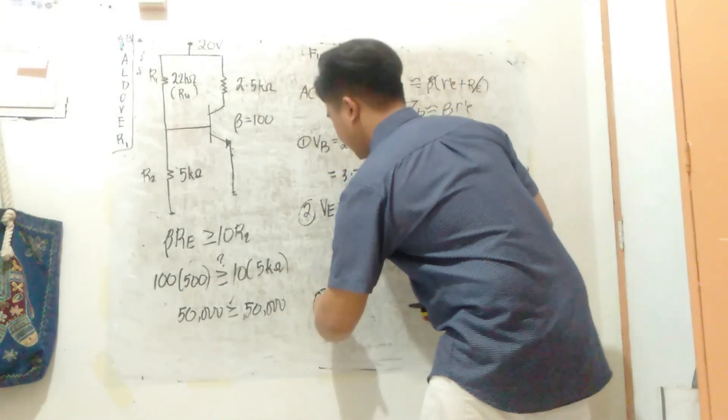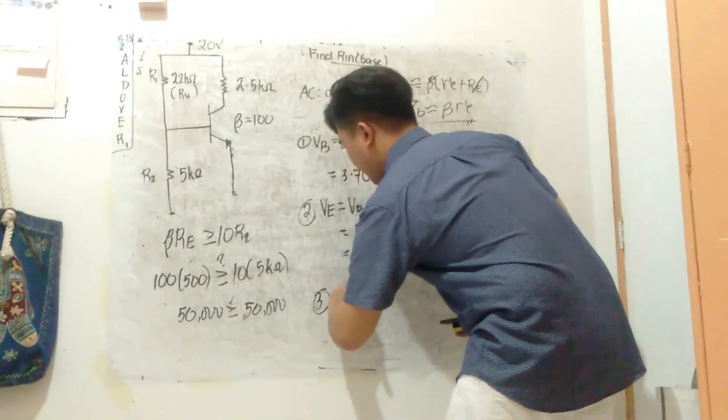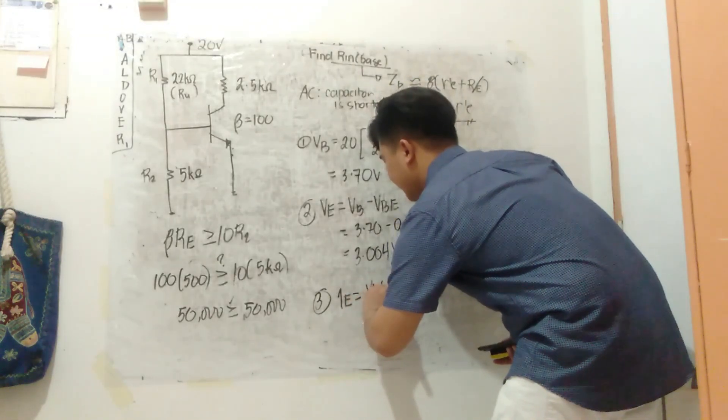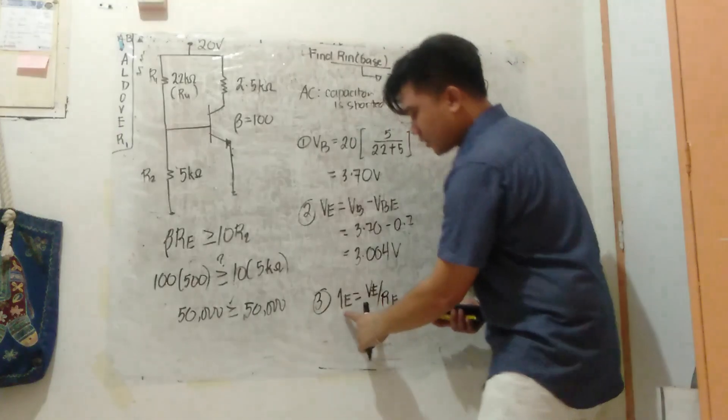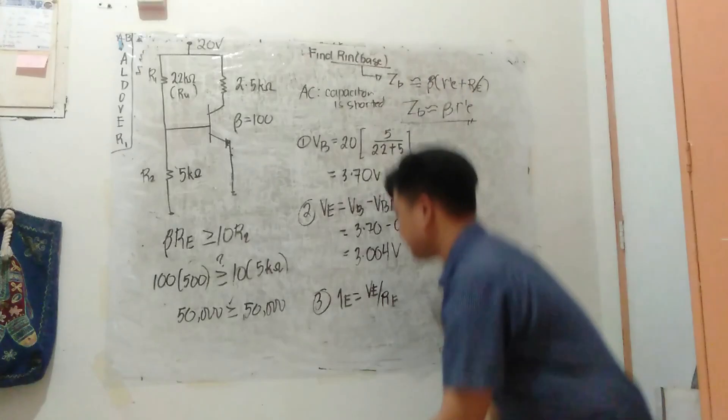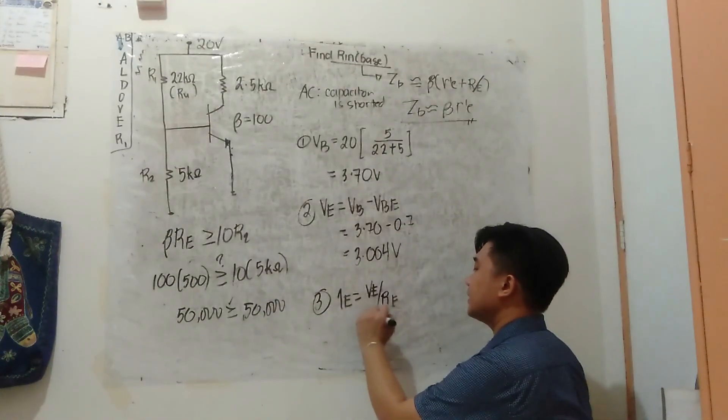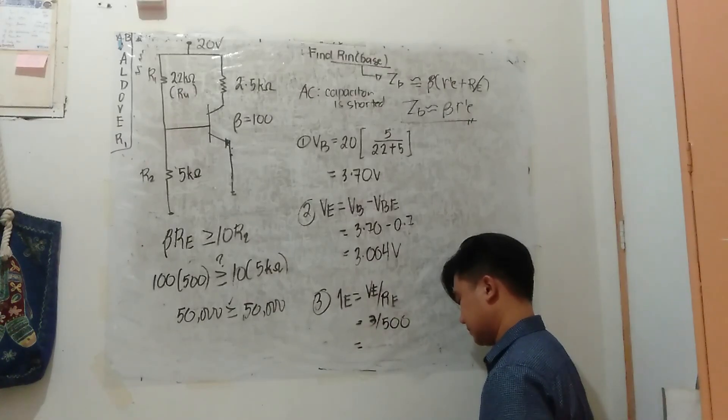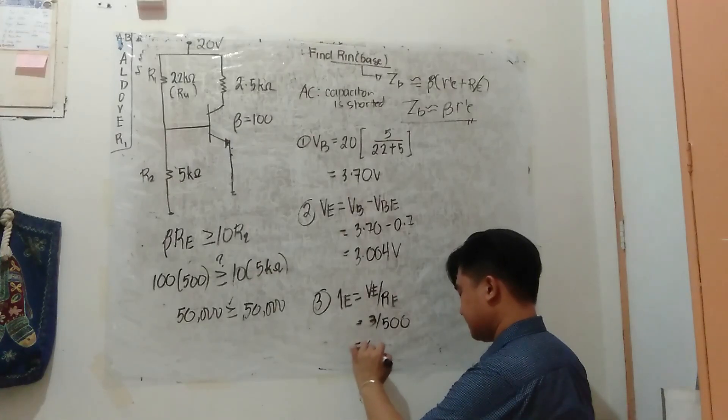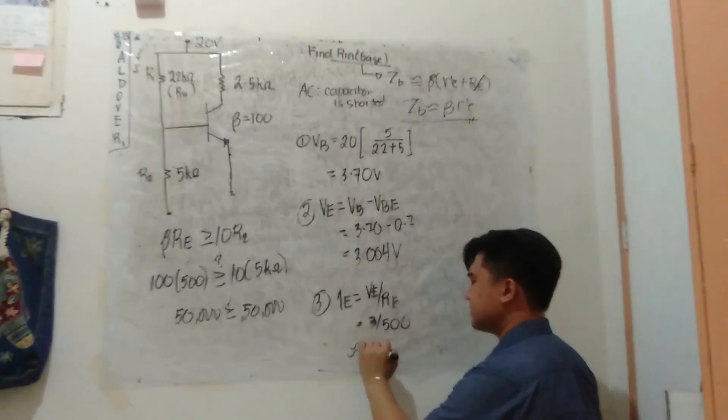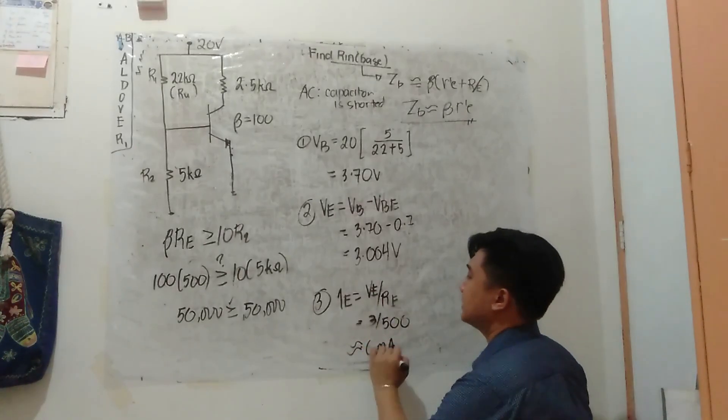Last step, find IE. IE is simply VE over RE. Of course guys, if IE is here, IE is also here and here. It can't be IC. So that is 3 over 500, approximately 6 milliamperes.